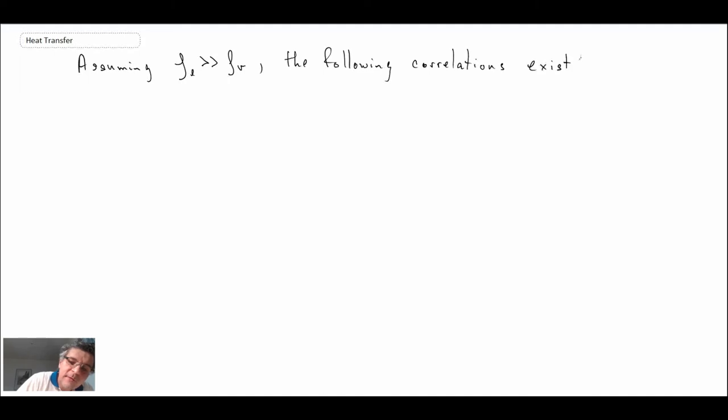With that assumption, we can then express the following correlations. We're going to begin with laminar. This one would need to be consistent with the one that Nusselt came up with analytically, but it will be defined in terms of a Nusselt number.